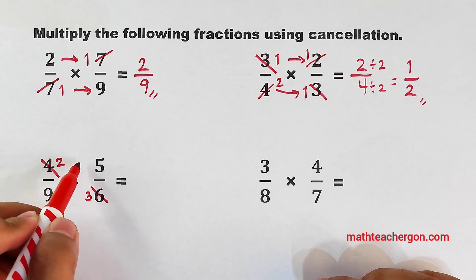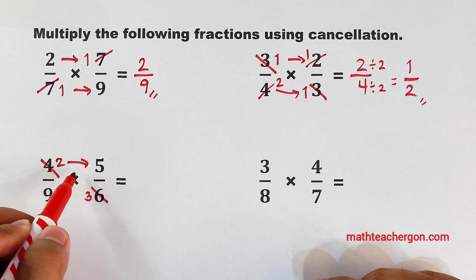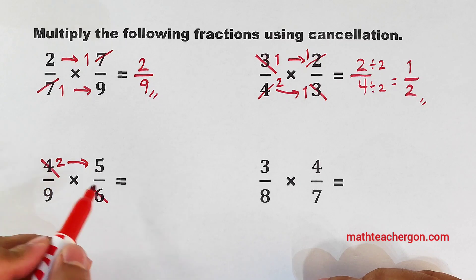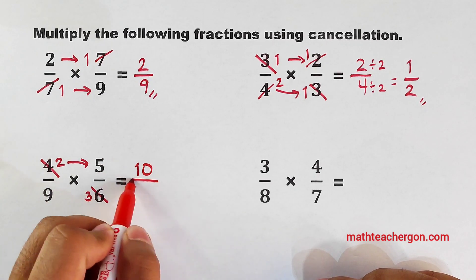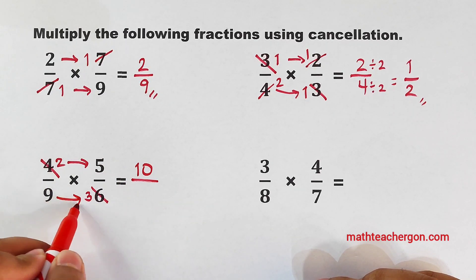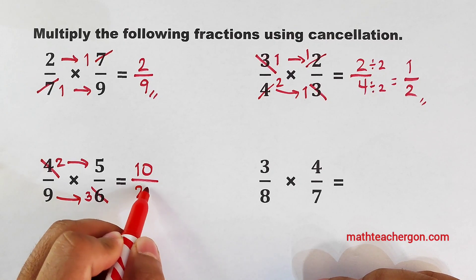So multiply these numbers. 2 times 5, that would be 10, 10 over 9 times 3, which is equal to 27.